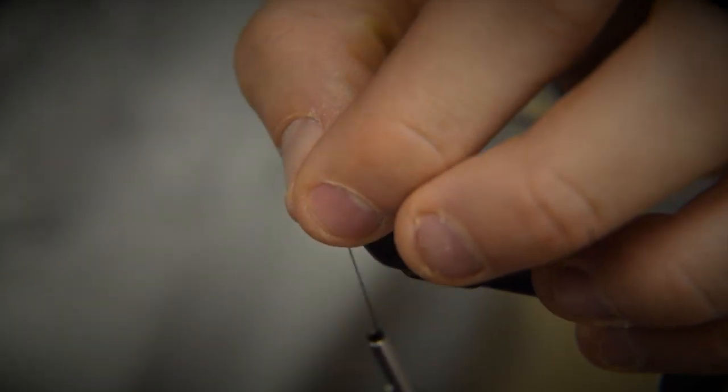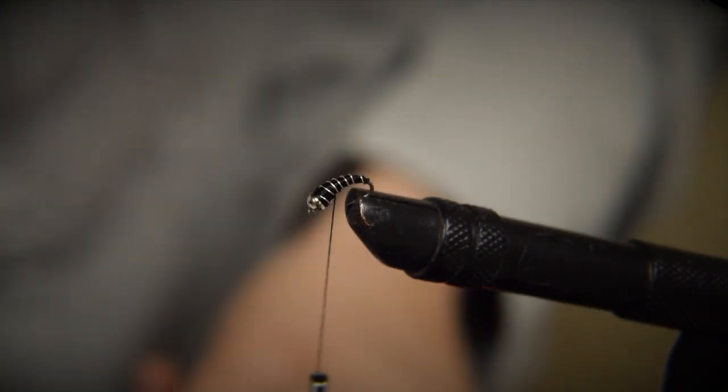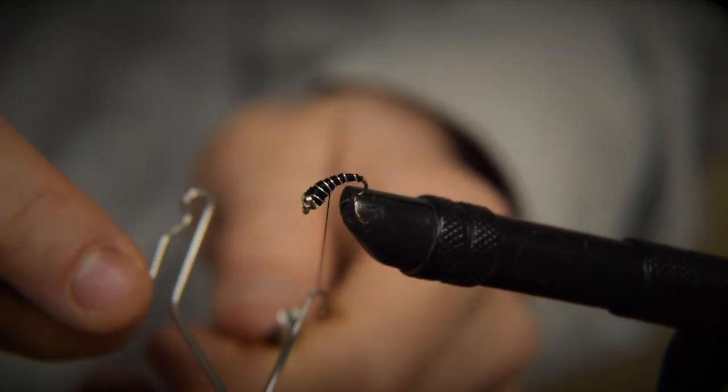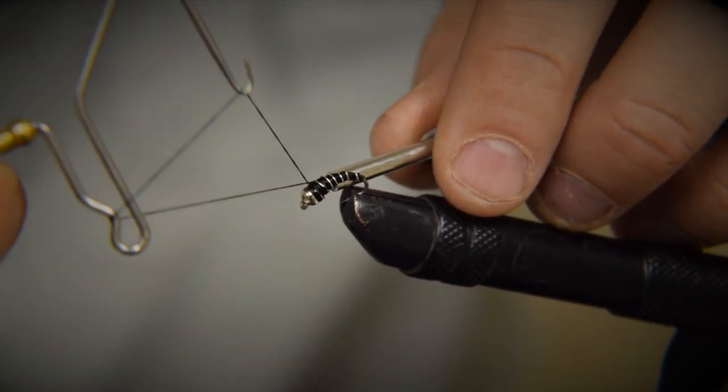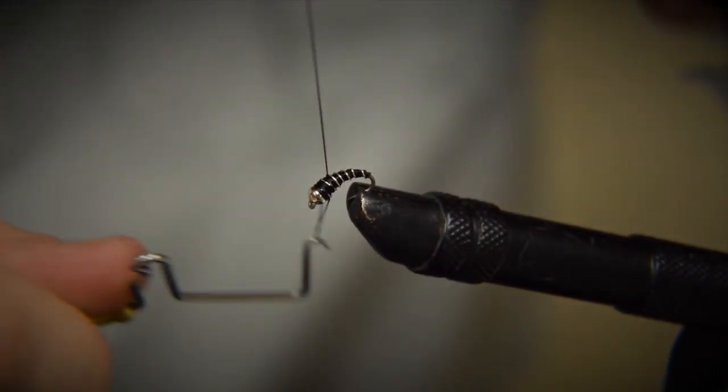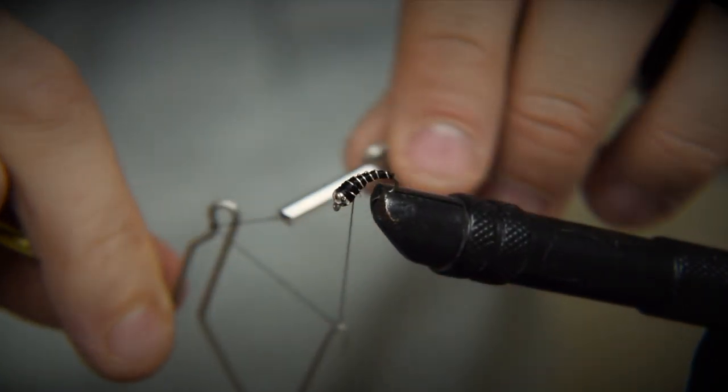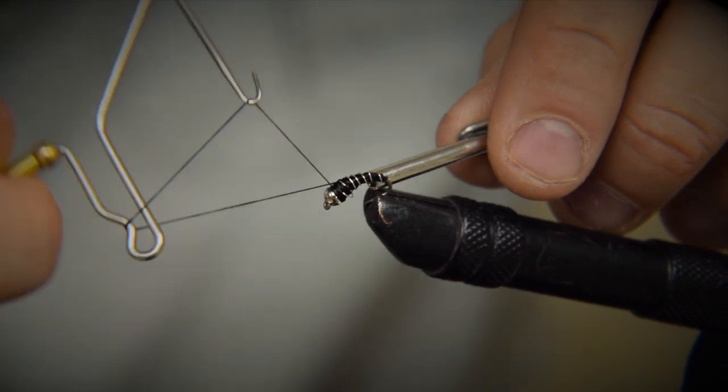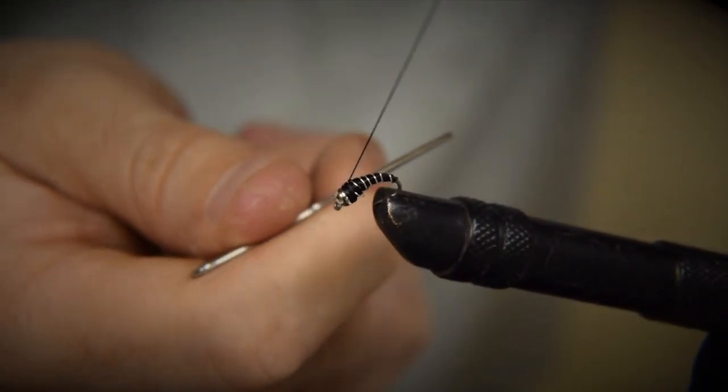And as always, the last step with any fly that we do here is we're going to take our whip finish, and we're going to whip finish in front of that wire, just behind that bead head. Once, twice, three times, slide it off the hook. Again, whip finish, around, there's my triangle. Once, twice, three times, slide it off the hook.